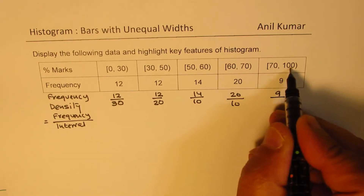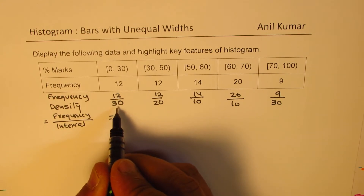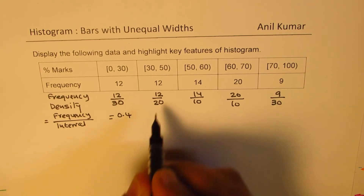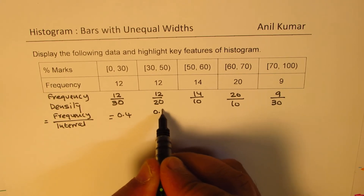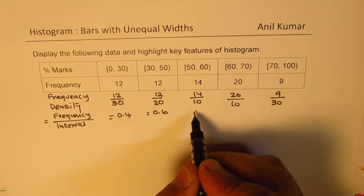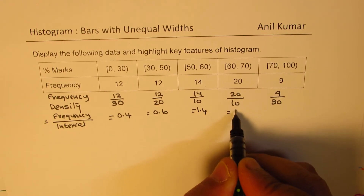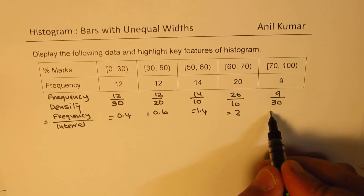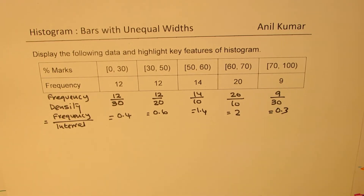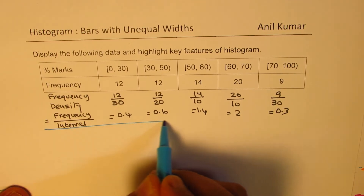When you divide 12 by 30 you get 0.4. Dividing 12 by 20 gives 0.6. 14 divided by 10 is 1.4. 20 divided by 10 is 2. And 9 divided by 30 is 0.3. That is how we get the frequency density.